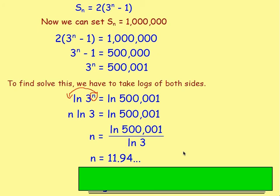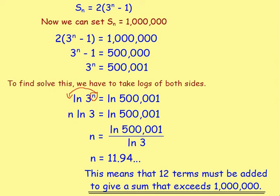11.94 doesn't make sense as a term number — n must be a whole number. The sum reaches 1,000,000 between the 11th and 12th terms. If you round down to 11, it won't quite have reached 1,000,000, so you must round up. This means 12 terms must be added to give a sum that exceeds 1,000,000. That's your answer.